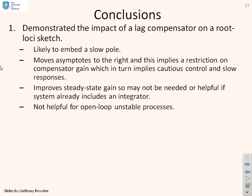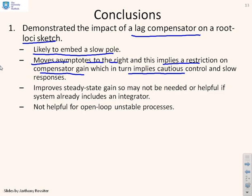We've demonstrated the impact of a lag compensator on a root loci sketch. It's likely to embed a slow pole because if you don't choose the pole and zero of the lag to be small, then you're just going to destabilise everything. It does move the asymptotes to the right. And this implies a restriction on compensator gain, which in turn implies that you're going for cautious control and slow responses.